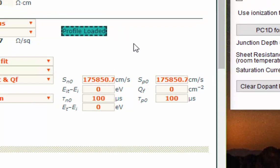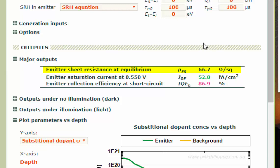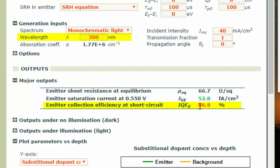And then the major outputs are just updated on the fly. So here we see that this emitter sheet resistance is 66.7 ohms per square. The saturation current density is 52.8 femto amps per centimeter square. And the IQE is 86.9.